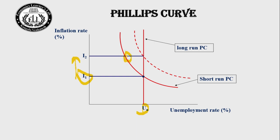In the short run, some internal or external factors will impact the economy. That's why the inflation rate will be lower and unemployment rate is lower. But after a certain time period, it will automatically come back to the actual level of unemployment rate. So we can conclude there is a trade-off between the inflation rate and unemployment rate in the short run, but in the long run there is no trade-off. Hope you have understood what is the Phillips curve and the difference between the short run and long run Phillips curve.